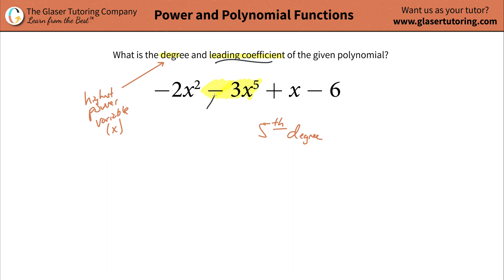Just be careful. That's why I had you highlight the whole thing. You have to include the sign along with it. So technically, the leading coefficient here is going to be a negative three. And remember, that leading coefficient always comes before the variable.